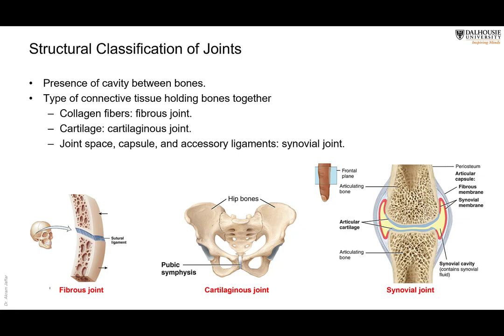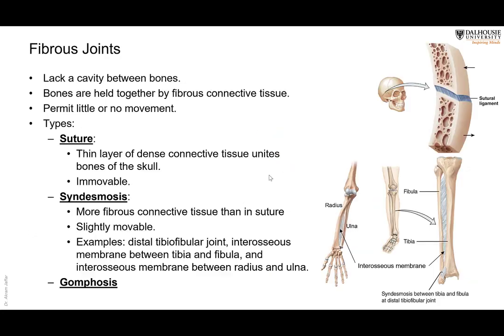The third type of joint has a space filled with fluid — synovial fluid — and a synovial membrane. These are the highly mobile joints. So whenever we need a mobile joint, the structure will be in the form of a synovial joint.